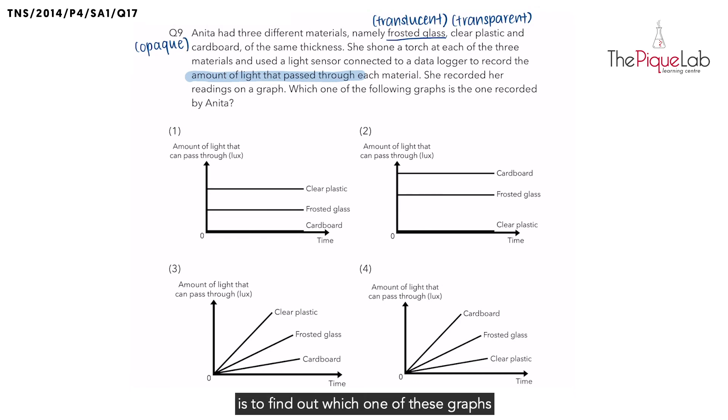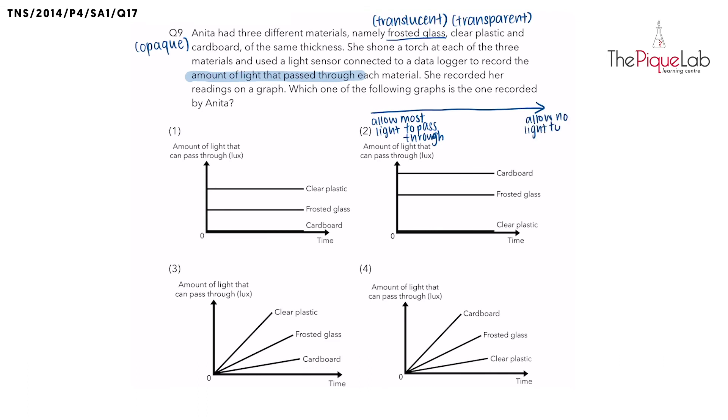What we need to do is find out which graph clearly shows the amount of light that can pass through each of these objects. Let's arrange them in order from the one that allows the most light to pass through to the one that allows the least. Out of the three materials - translucent, transparent, and opaque - which one will allow the most light to pass through? It would be the clear plastic, which is transparent. So clear plastic will be on the left end of the arrow.